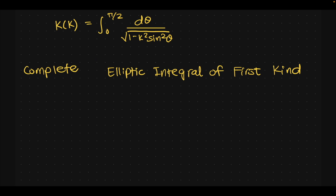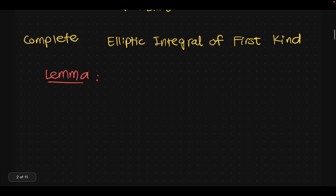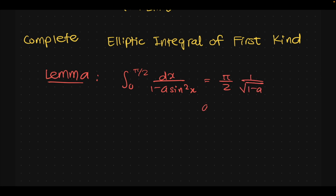That's just the terminology. Now to do this we need the following lemma. We need to prove: the integral from 0 to π/2 of dx over (1 minus a·sin²x) equals π/2 times 1 over √(1−a), for a less than 1. Otherwise we have a divergence.